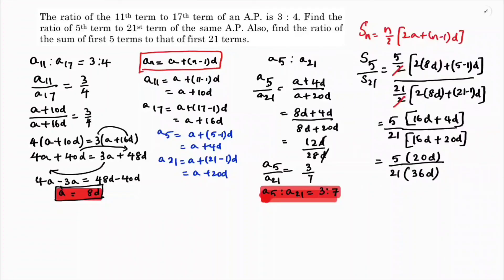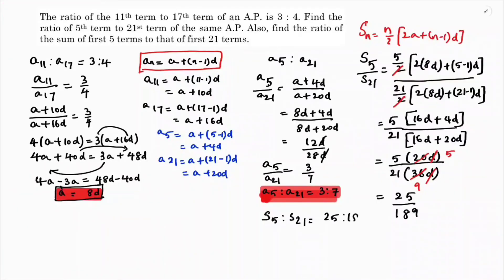So if we cancel further, d and d get cancelled. We have 5 by 21 times 20 over 36, which simplifies to 5 times 5 over 21 times 9. So 4 times 9 is 36, 5 times 5 is 25, and 21 times 9 is 189. So the ratio of s5 is to s21 is 25 is to 189.